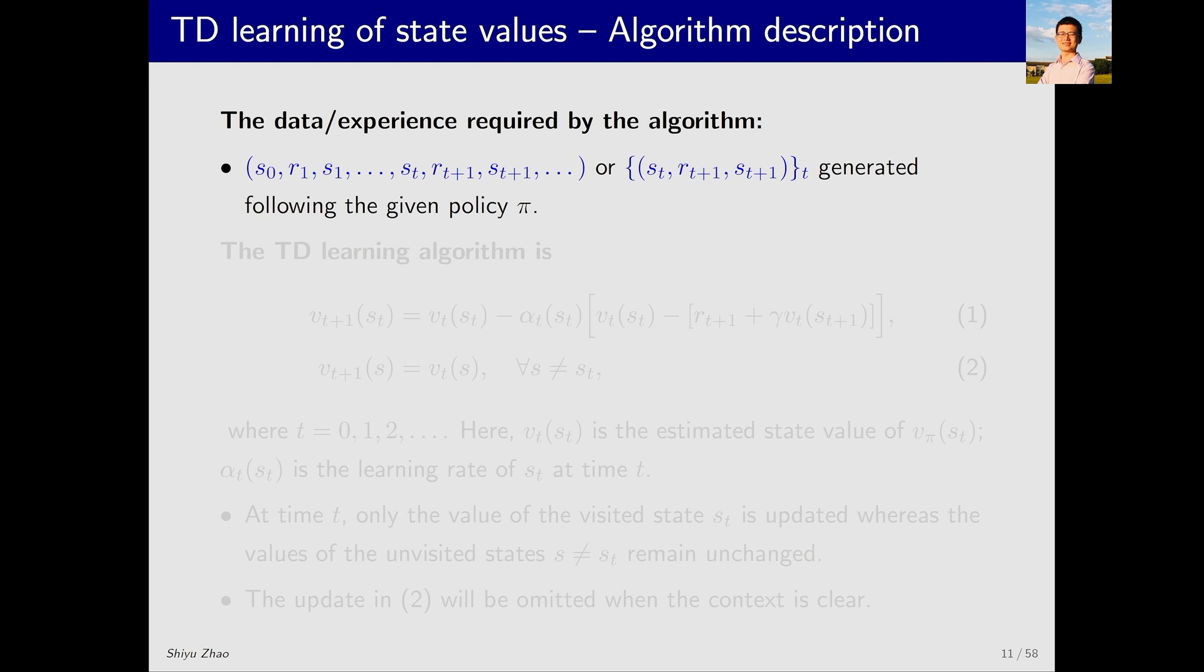The TD algorithm requires data instead of models. What kind of data does it require? Here it is, it can be called data or experience, and it can be written in a long sequence. Starting from s_0 I get r_1 and transition to s_1, and this continues until time t, where starting from s_t I get r_{t+1} and transition to s_{t+1} and so on. This long sequence can also be written in a set form, where the curly braces represent a set. The elements of this set are inside the small parentheses, each containing three elements: s_t, r_{t+1}, and s_{t+1}. Both of these representations can be called experience. The experience data is generated by the given policy pi.